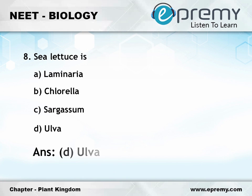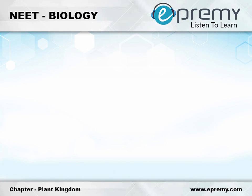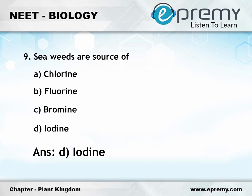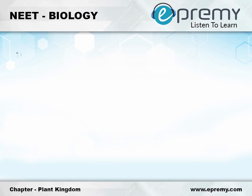Question number nine: seaweeds are a source of option A chlorine, option B fluorine, option C bromine, option D iodine. The answer is option D iodine.